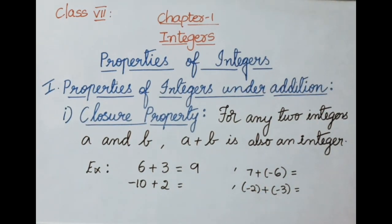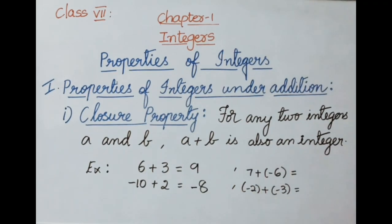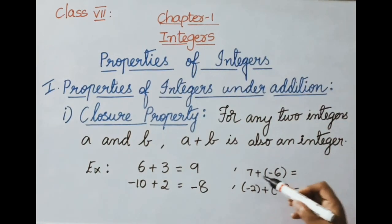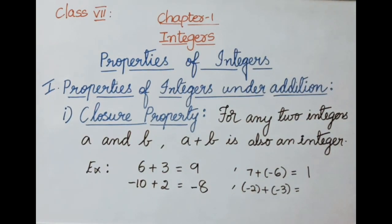See next: minus 10 plus 2 equals minus 8. Both minus 10 and plus 2 are integers, and their sum minus 8 is also an integer. Similarly, 7 plus minus 6 equals 1 — both integers, sum is an integer. And minus 2 plus minus 3 equals minus 5 — both integers, sum is also an integer.